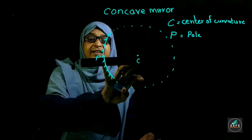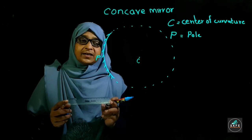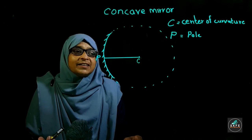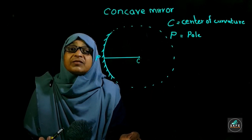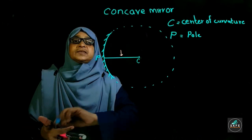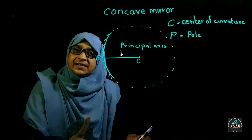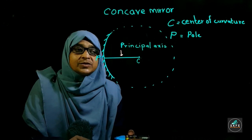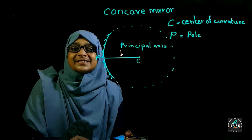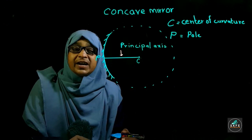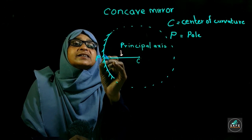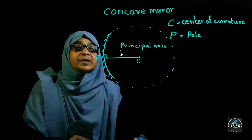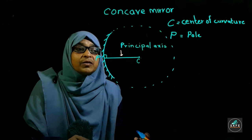The line joining the pole and the center of curvature is known as the principal axis. This principal axis is the radius of the sphere, and since the radius is always perpendicular to the surface, the principal axis is perpendicular to the pole of the mirror.